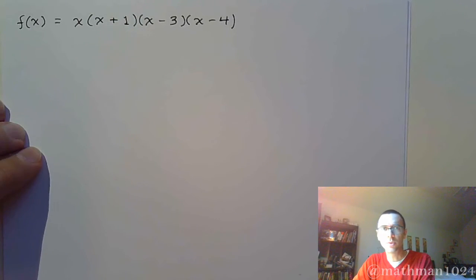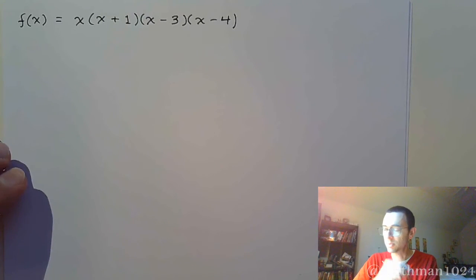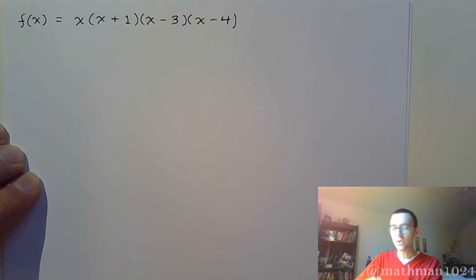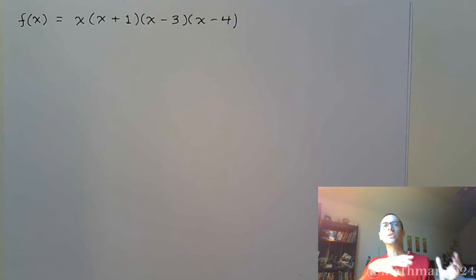Now, one of the first things we need to do is identify what the degree is. We don't really have that because it's not written in the right way. It's not all expanded out. But if you were to multiply this, here's how you can figure out what the lead term is, because the lead term is going to tell you your shape and your end behavior. All of the other pieces don't really matter so much.